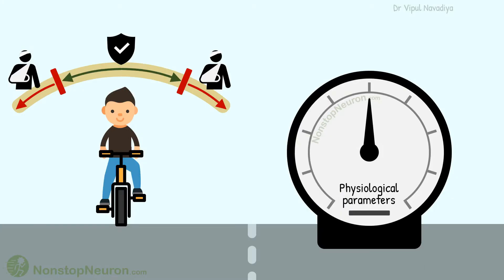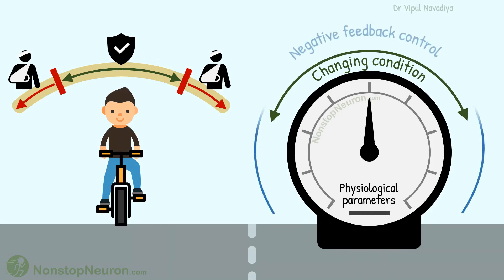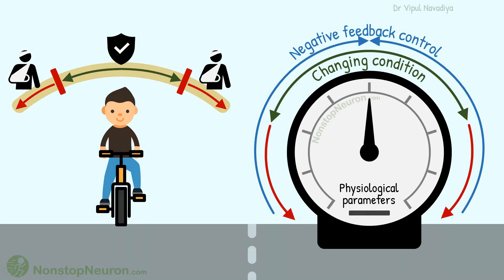Controlling physiological parameters is like controlling a bicycle. They are always kept in balance. There is some leaning right and left to adjust according to changing conditions, but negative feedback control brings them back to the balance. If there is too much deviation, the result is damage in the form of disease or death.